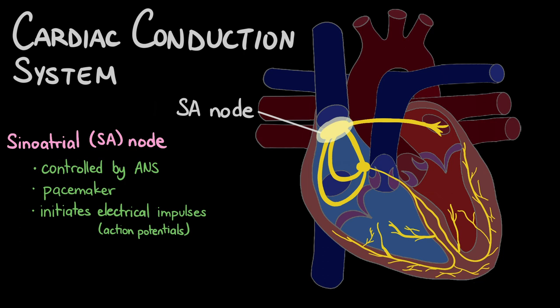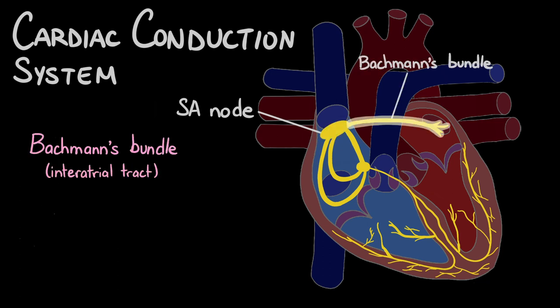The SA node is located in the right atrium, but the action potential also needs to reach the left atrium simultaneously. So there's this structure over here called the Bachmann's bundle, or the interatrial tract.